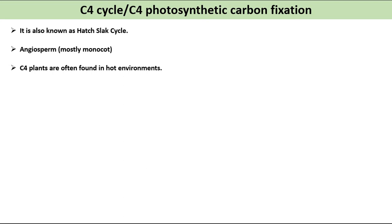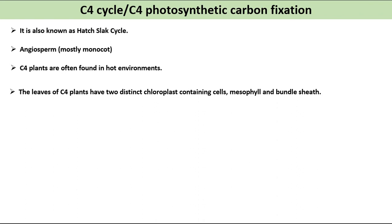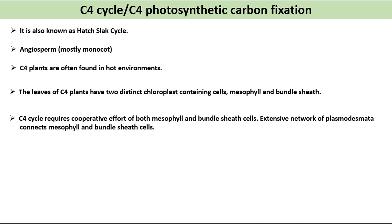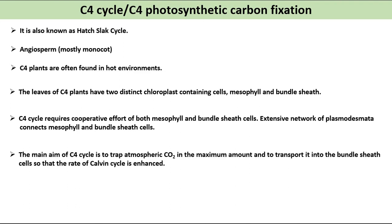C4 plants are often found in hot environments. The leaves of C4 plants have two distinct chloroplast-containing cells: mesophyll and bundle sheath. C4 cycle requires the cooperative effort of both mesophyll and bundle sheath cells. An extensive network of plasmodesmata connects these mesophyll and bundle sheath cells.